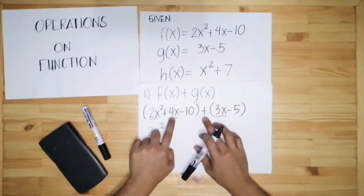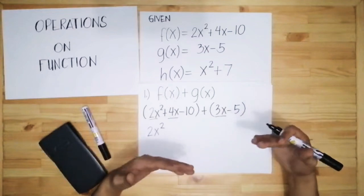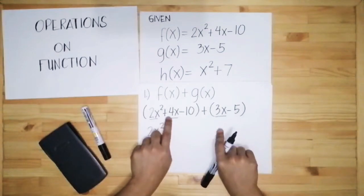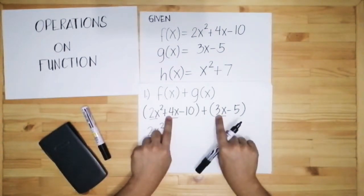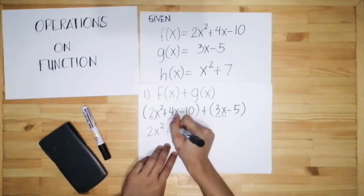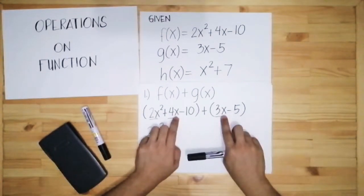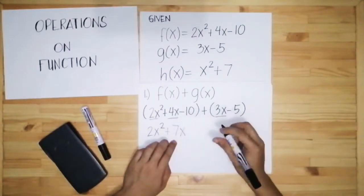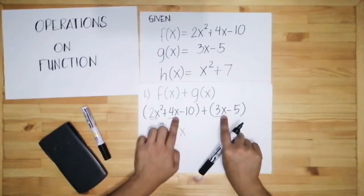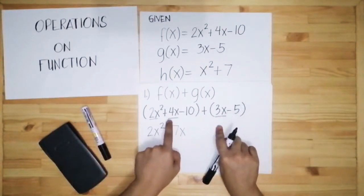When we say add, we follow the rules for integers. If the signs are the same, we add; if different, we subtract. Here, positive 4 and positive 3 have the same sign, so we add them: 4 plus 3 is 7. Some students might add the exponents, turning x into x squared — that is wrong. When combining like terms, you just copy the variable, which is x. So we get 7x.